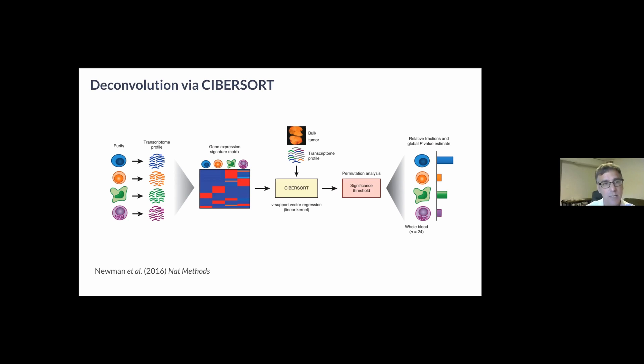The authors profiled purified cell types and defined a signature matrix much as I described earlier. CIBERSORT then defines the fraction of each cell type by applying support vector regression to the signature matrix and an input profile to be deconvolved.